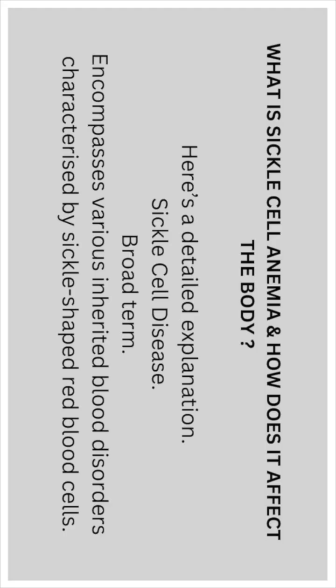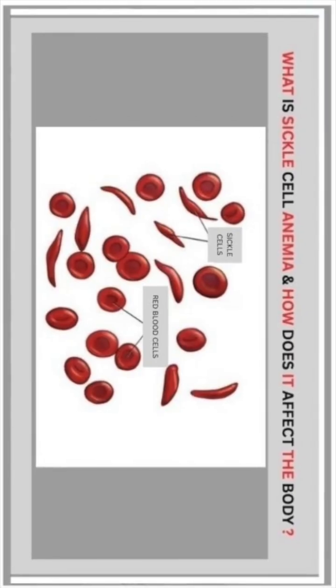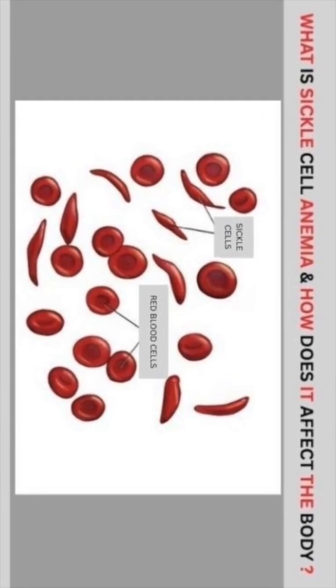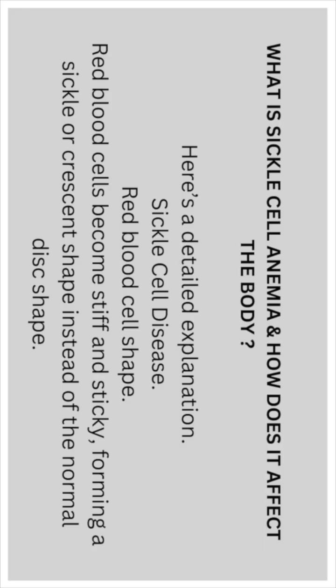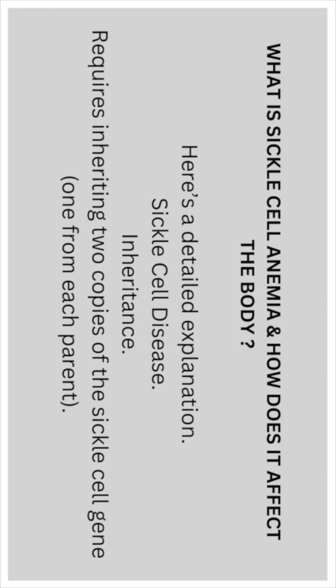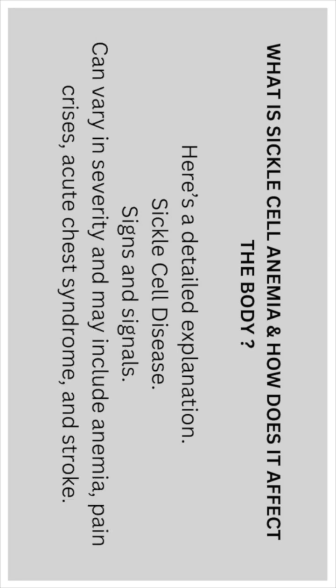Sickle cell disease is a broad term encompassing various inherited blood disorders characterized by sickle-shaped red blood cells. The red blood cells become stiff and sticky, forming a sickle or crescent shape instead of a normal disc shape. Inheritance requires two copies of the sickle cell gene, one from each parent. Signs and symptoms can vary in severity and may include anemia, pain crisis, acute chest syndrome, or stroke.